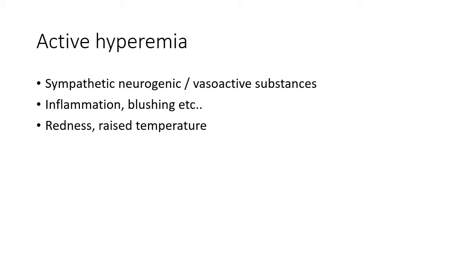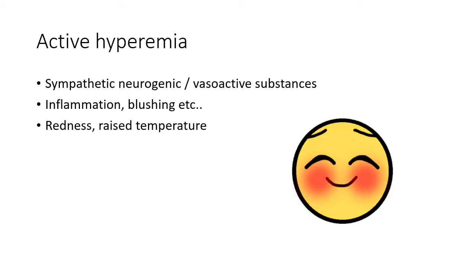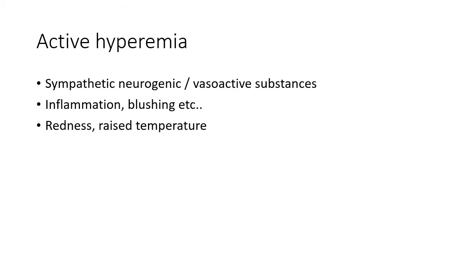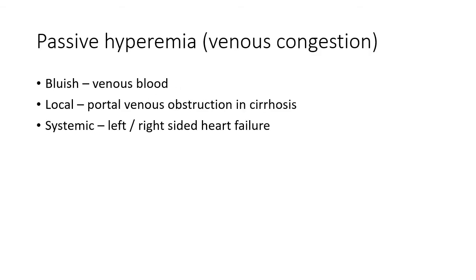Active hyperemia is due to dilation of arteries. This dilation happens either through a sympathetic neurogenic mechanism or due to some vasoactive substances. Examples include inflammation or blushing — in flushing there is flushing of the skin with increased input of blood due to an emotional response. Other examples include menopausal flush and muscular exercise. Clinically, hyperemia is characterized by redness and raised temperature in the affected part.